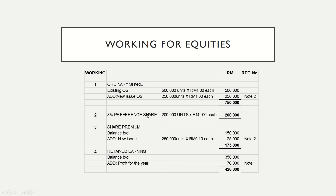Working 2: preference shares at RM1 each times 200 units equals RM200,000. For share premium, the balance brought forward provided in the table equals RM150,000. You need to add the share premium on the new issue of ordinary shares: 10 cents times 250,000 units equals RM25,000. So RM150,000 plus RM25,000 equals RM175,000.